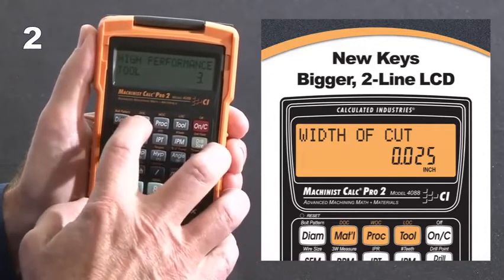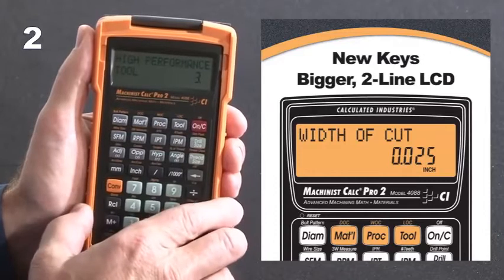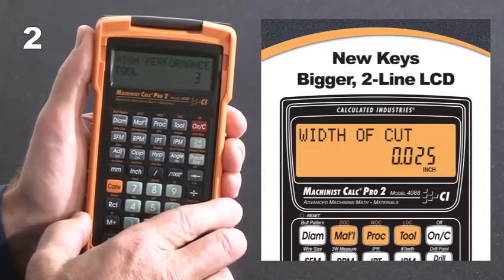These, combined with the new depth of cut, width of cut, and length of cut keys, allow you to be even more accurate in determining your starting speeds and feeds.